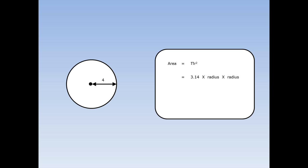Pi is 3.14 and r squared means the radius times the radius. The radius is 4, so we fill in 4 and 4. And this is equal to 50.24 centimetres squared.